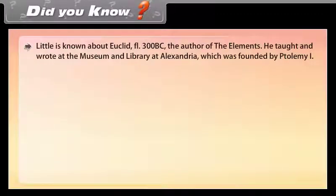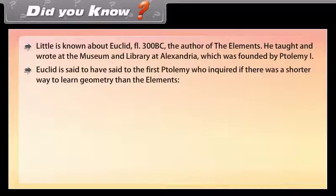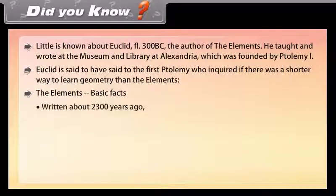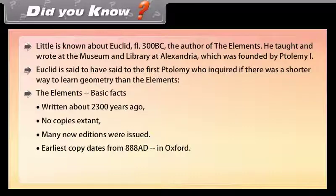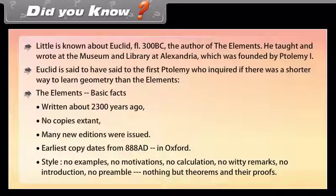Did you know? Little is known about Euclid, the author of the Elements. He taught and wrote at the museum and library at Alexandria, which was founded by Ptolemy I. Euclid is said to have said to the first Ptolemy, who inquired if there was a shorter way to learn geometry than the elements: There is no royal road to geometry. The Elements: Basic facts written about 2300 years ago. No copies extant. Many new editions were issued. Earlier copy dates from 888 A.D. in Oxford. Style: No examples, no motivations, no calculations, no witty remarks, no introduction, no preamble. Nothing but theorems and their proofs.